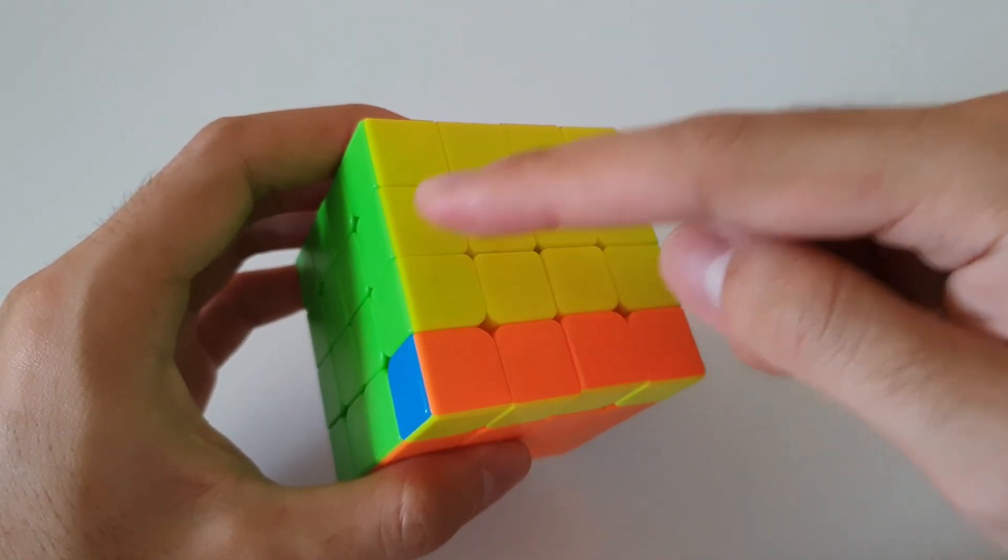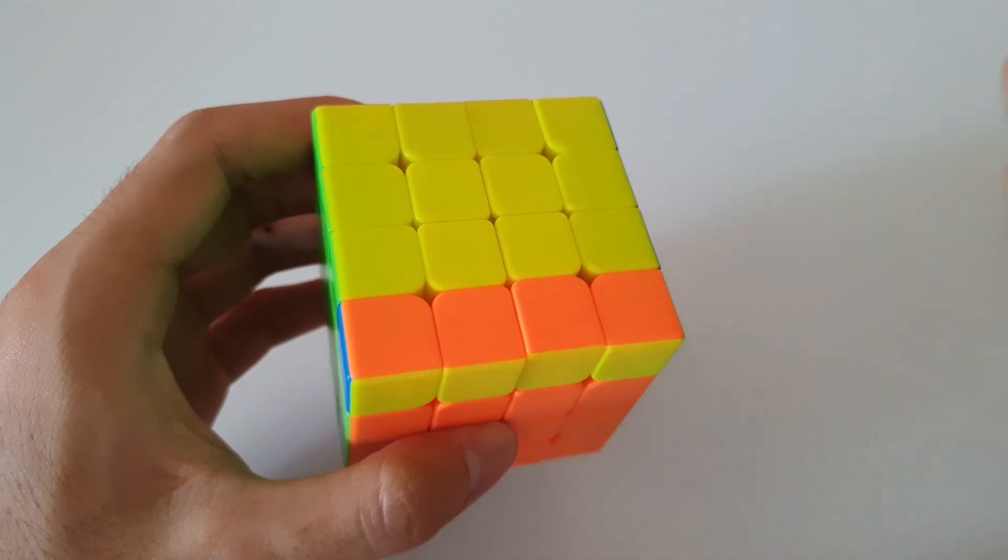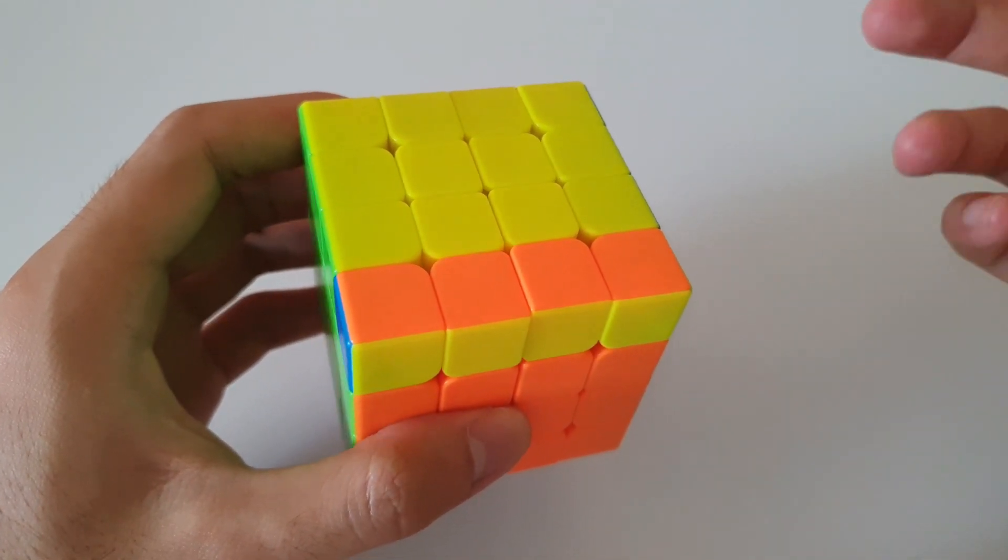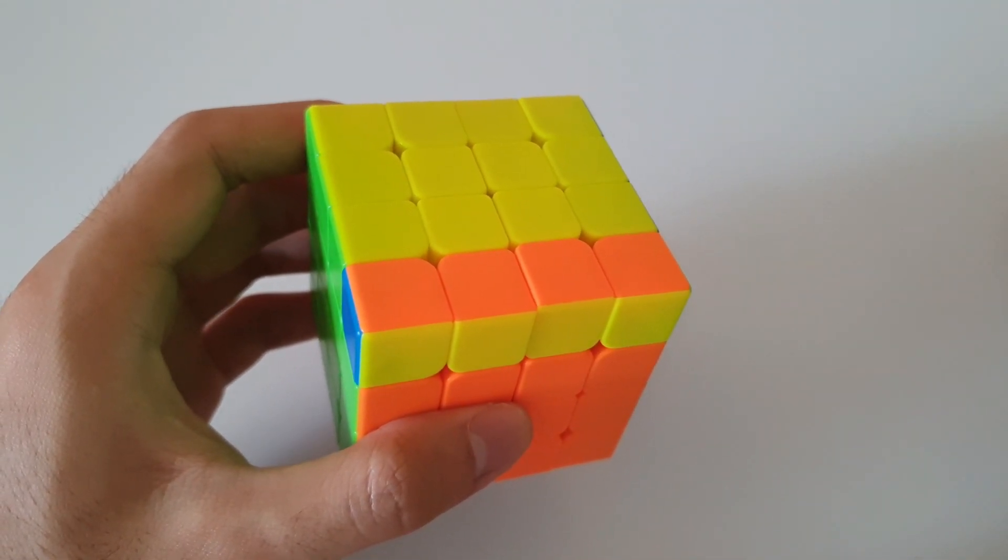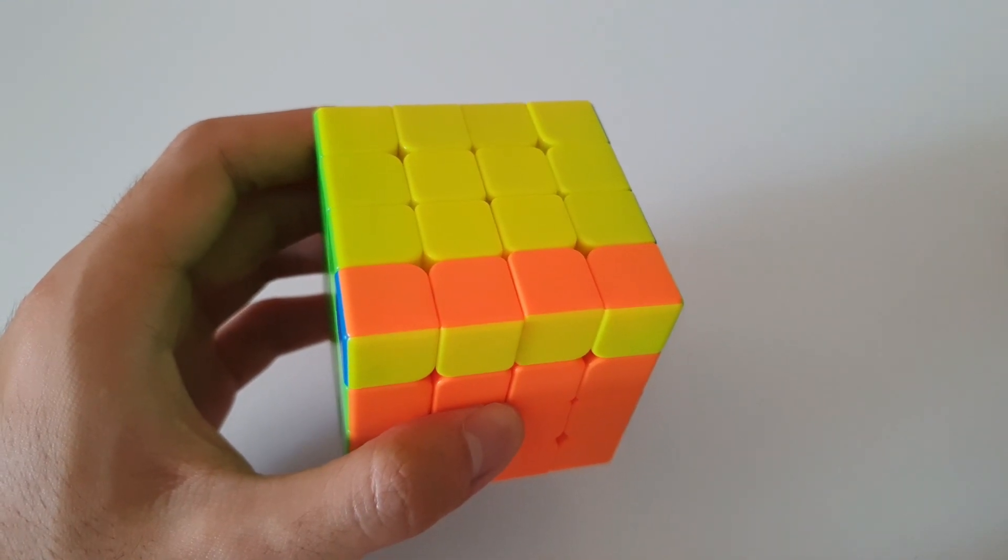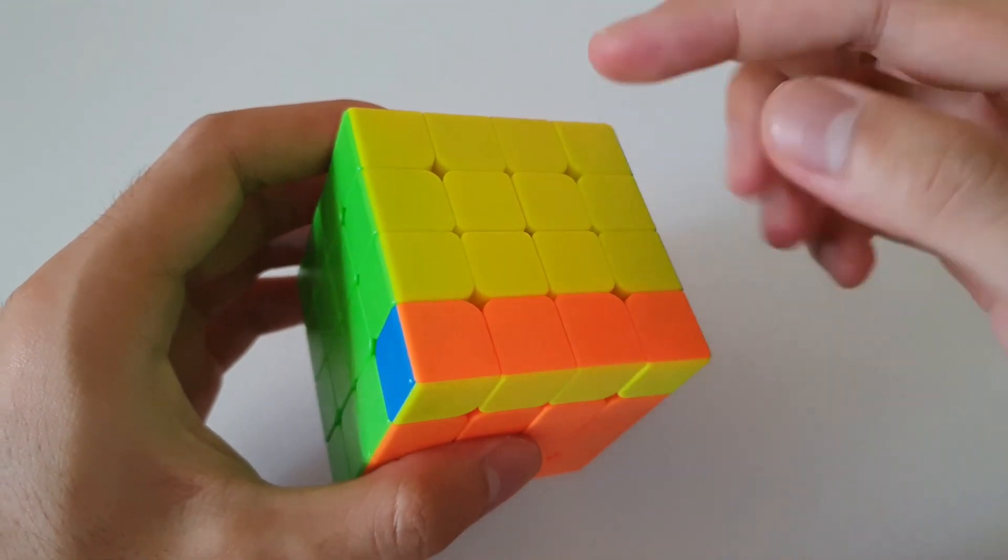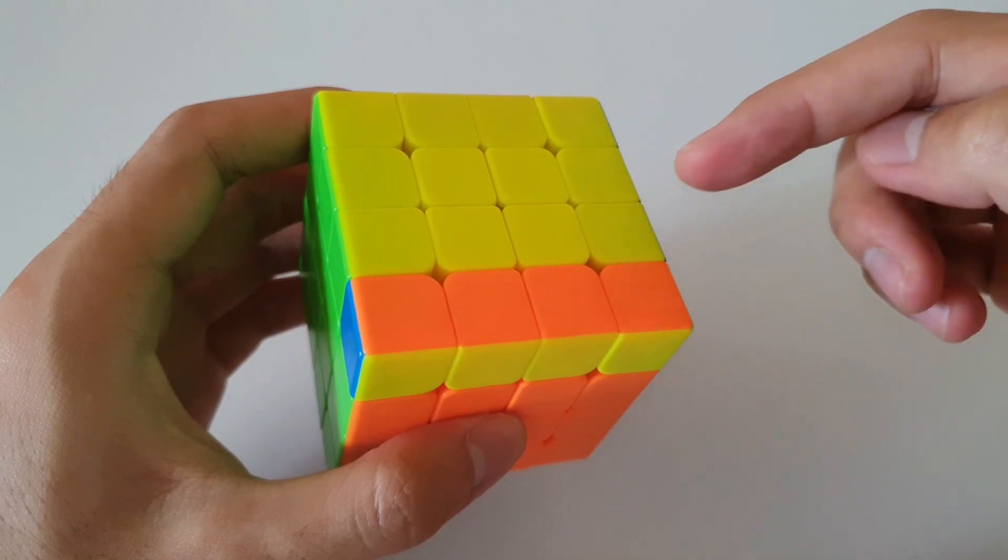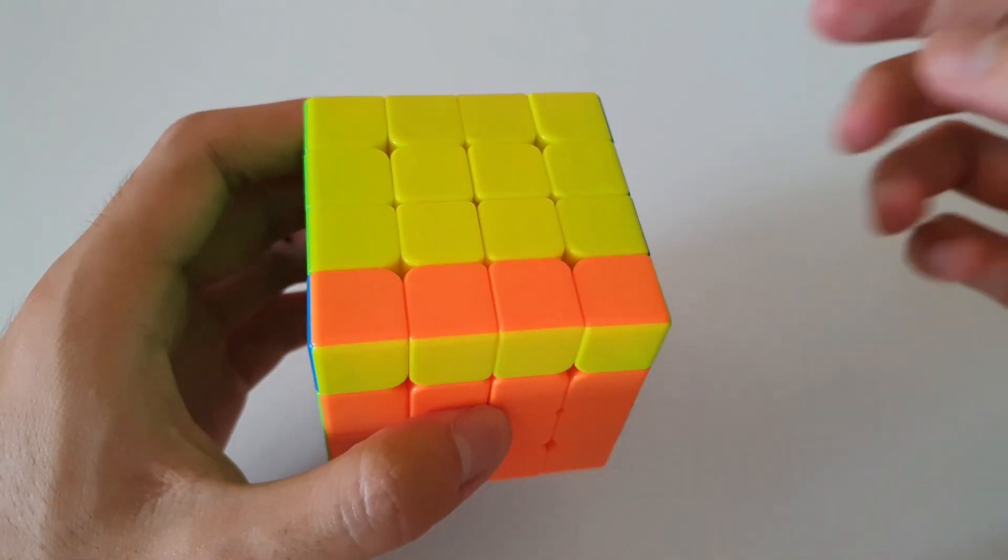So in this case we have three pairs of oriented edges. On a 3x3 you can never get to last layer and have only three oriented edges, you either have two or four. But on 4x4 you can have three pairs of oriented edges, you can also have a single pair of oriented edges.